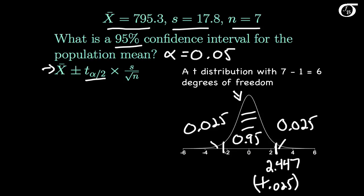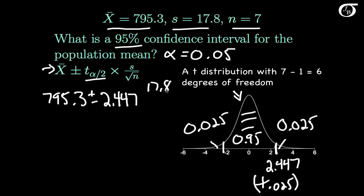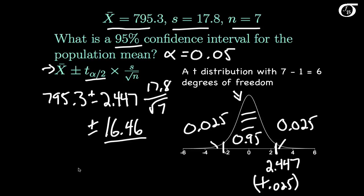Now we have everything we need to calculate our confidence interval. The confidence interval is the sample mean of 795.3, plus and minus the t value of 2.447, times the sample standard deviation of 17.8, over the square root of the sample size. This works out to 795.3 plus and minus 16.46. So 16.46 is our 95% margin of error, giving a lower bound of 778.8 and an upper bound of 811.8.